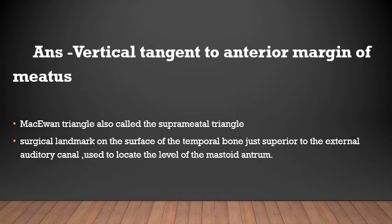Correct answer: vertical tangent to anterior margin of meatus. Mackie-Mann's triangle, also called suprameatal triangle, is a surgical landmark on the surface of the temporal bone just superior to the external auditory canal, and it is used to locate the level of the mastoid antrum.